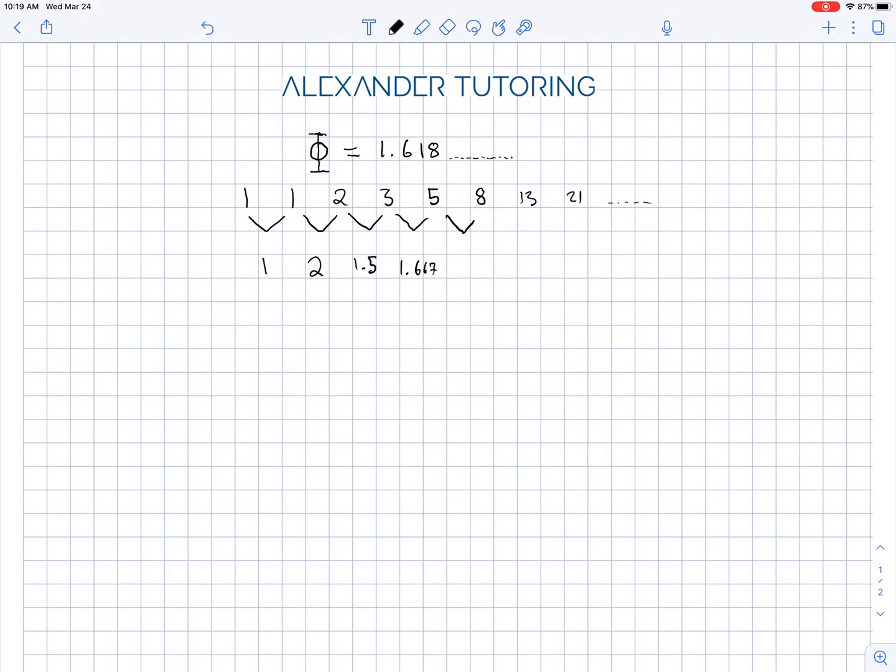8 divided by 5 is 1.6 on the nose. 13 divided by 8 is 1.625, and the last one, 21 divided by 13. Of course, this can go on forever, is 1.615385.